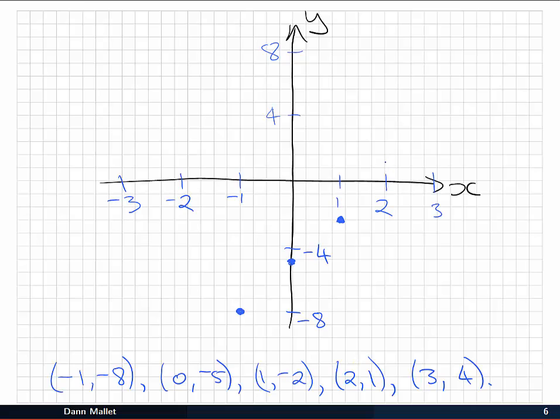(2, 1), which would be roughly here. And finally 3 all the way up to 4. So you can see we've got our 5 coordinates or ordered pairs right there.